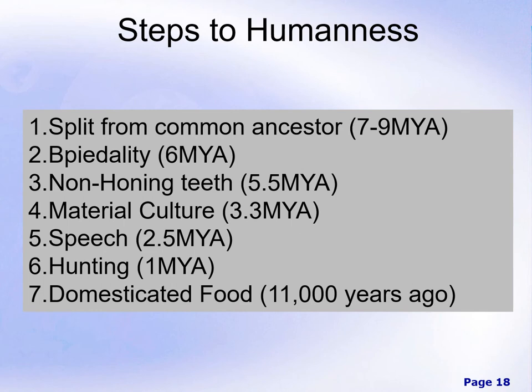Looking at some steps to humanness that we'll cover throughout the semester: at around seven to nine million years ago, we have the split with our last common ancestor with chimpanzees. At around six million years ago, we see the very beginnings of the shift to bipedality. Many of our ancient ancestors were not complete bipeds — a lot of them were part-time bipeds, walking on two feet sometimes and on all four at other times. It wasn't until around two million years ago, really with the development of Homo erectus, that we got our first true human-like walker and runner.